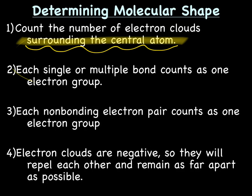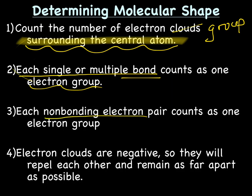So how do we get this electron cloud, or another way to put that is electron group. Each single or multiple bond counts as one electron group. Each non-bonding electron pair, or unshared pairs, counts as one electron group. And keep in mind that electron clouds are negative, so they will repel each other and remain as far apart as possible.